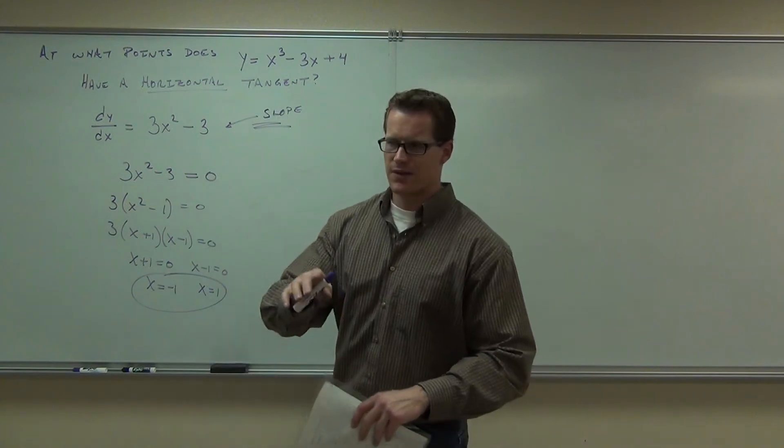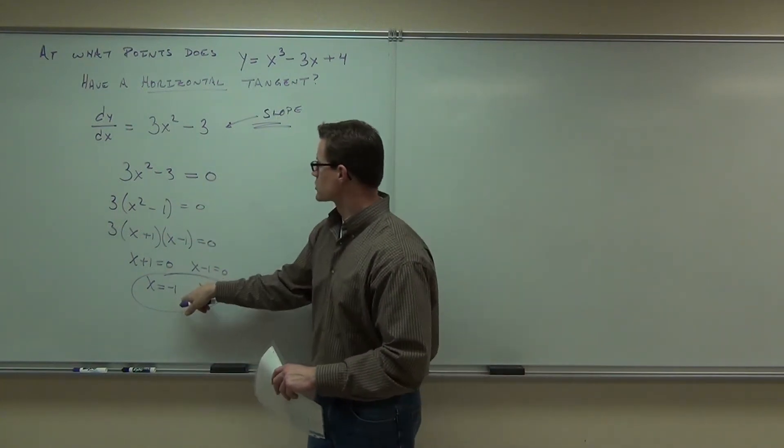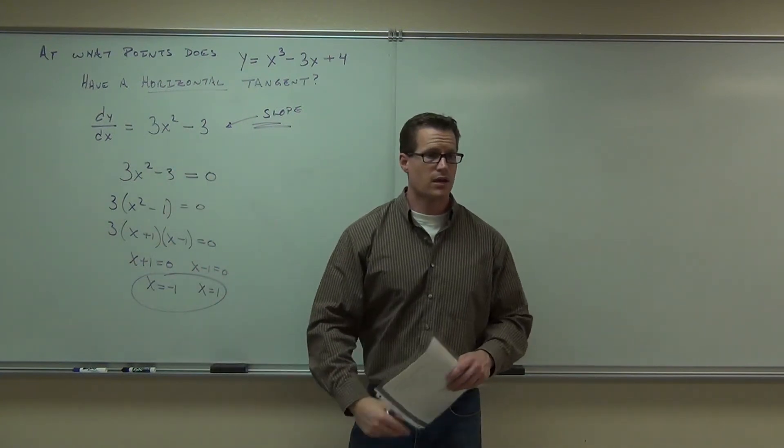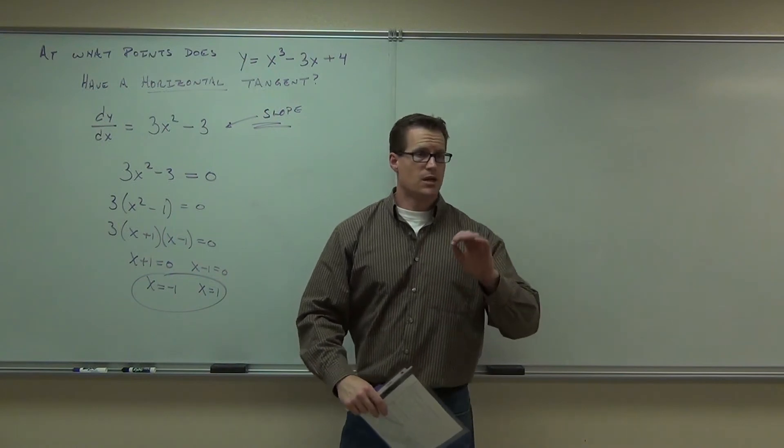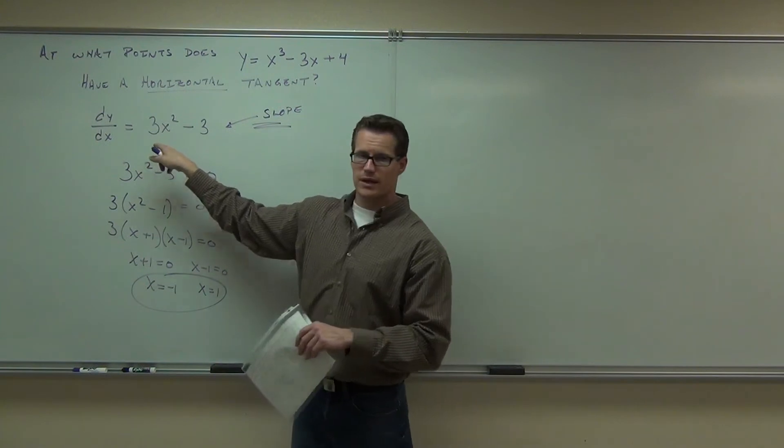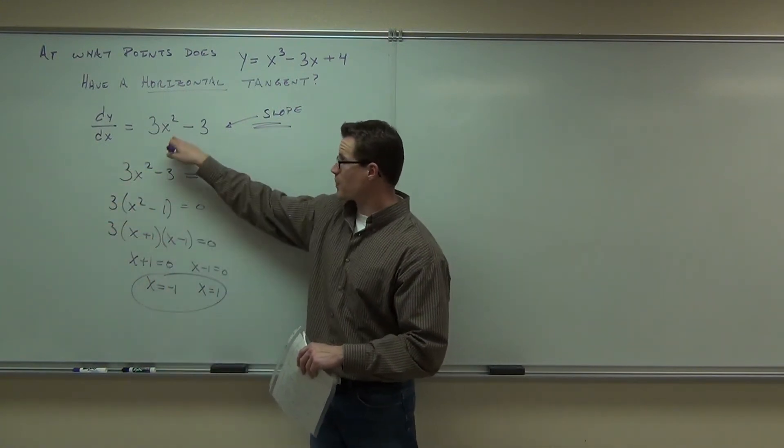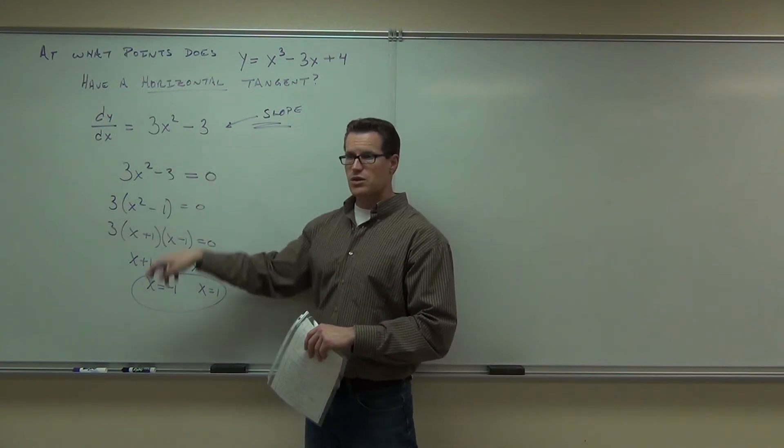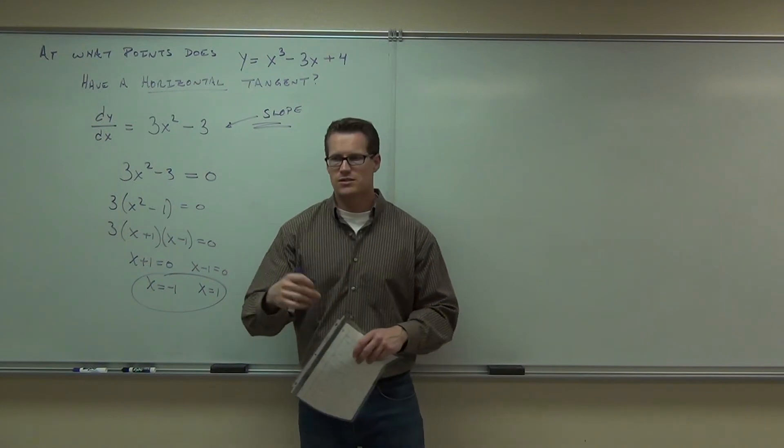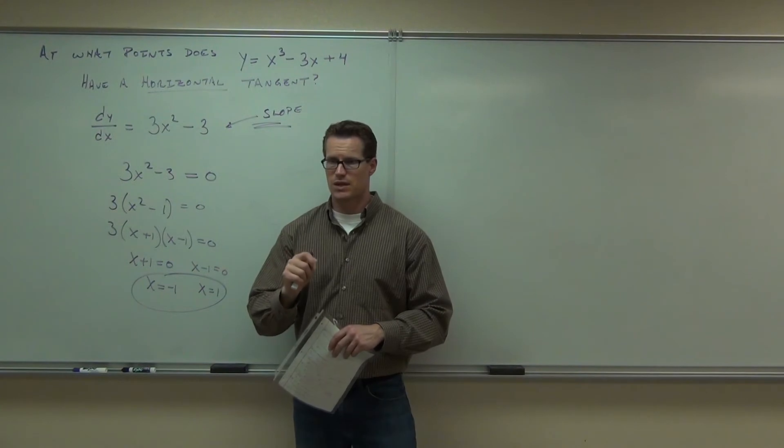Hey, do something for me real quick. Just verify this for your own edification here. Take those, plug it into that. Take these and plug it into that and see what you get. Take negative one and plug it in. How much do you get? You get zero. Take one and plug it in. How much do you get? So would you agree that these are the points where your slope is going to equal zero? These are the points where you're going to have a horizontal tangent. These are actually not the points. I misspoke. These are the x values.